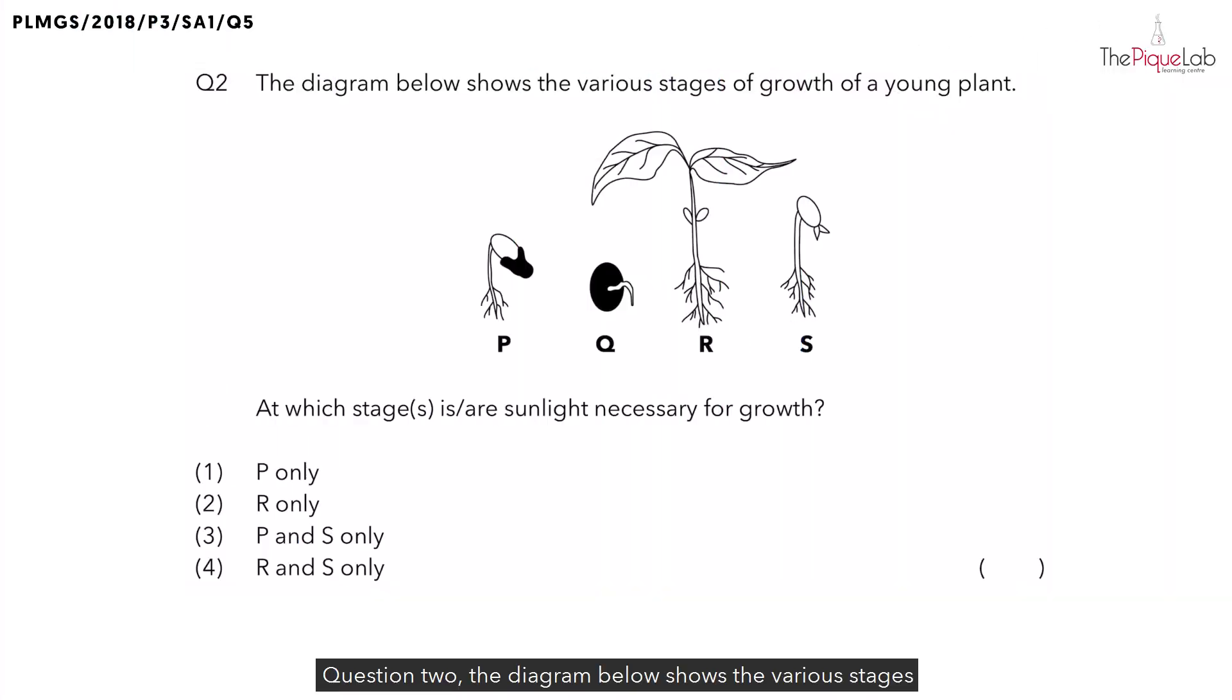Question 2. The diagram below shows the various stages of growth of a young plant. At which stage is sunlight necessary for growth? To answer this question, we must first find out which part of the plant needs sunlight.